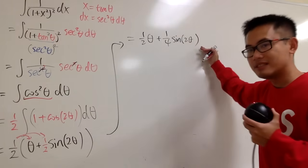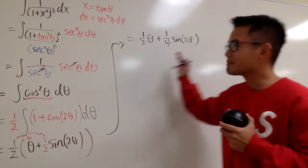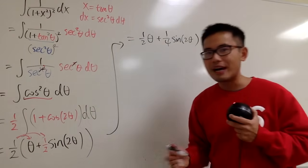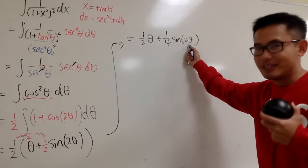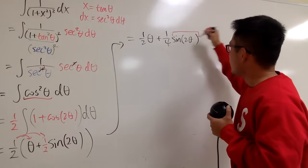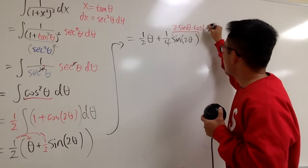Well, this is not good, because we end up in the theta world. Even though we kill the integral, we have to go back to the x world. And here we end up with a double angle, which is not great either. But sine 2 theta is the same as 2 times sine theta times cosine theta.